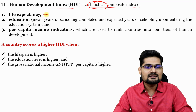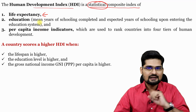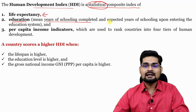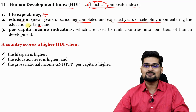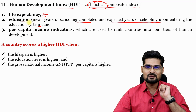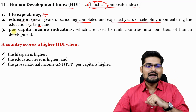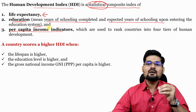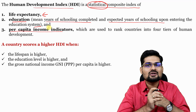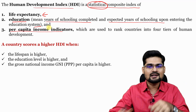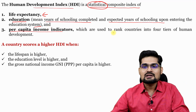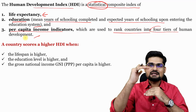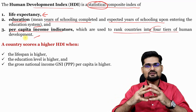Life expectancy was one factor. Education — specifically the years of schooling completed and expected years of schooling upon entering the education system — was the second parameter. Third is per capita income indicators: how much income per head exists in that particular country or state. These factors are used to rank countries into four tiers of human development: very high, high, medium, or low.